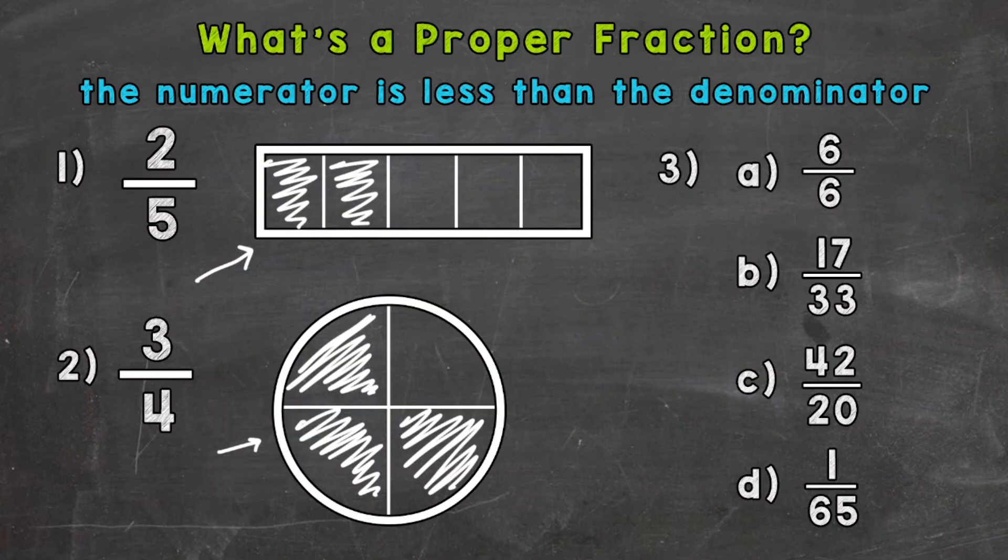And on to number three, where we have four choices, and we need to pick out the proper fractions out of those four choices. So choice A, we have six-sixths. So the same number, same numerator as the denominator. So in this case, the numerator is not less than the denominator. So if you have the same number on top and bottom, same numerator and denominator, it's actually considered an improper fraction. So A would not be a proper fraction.